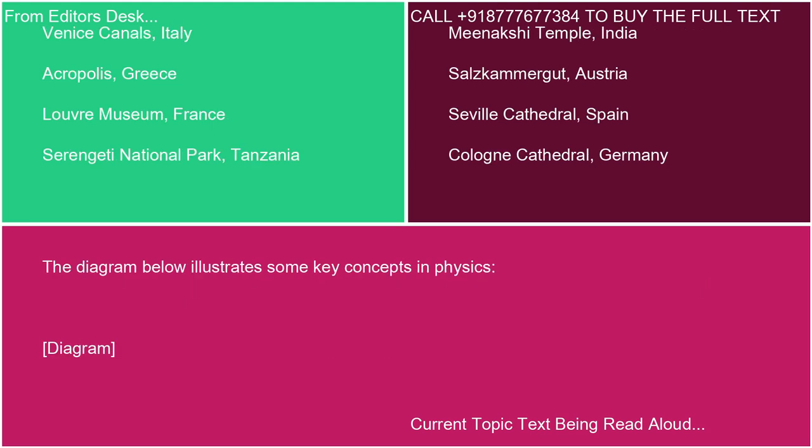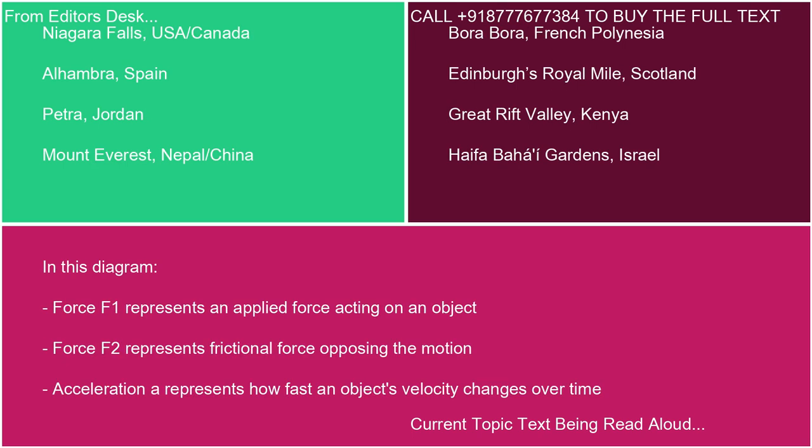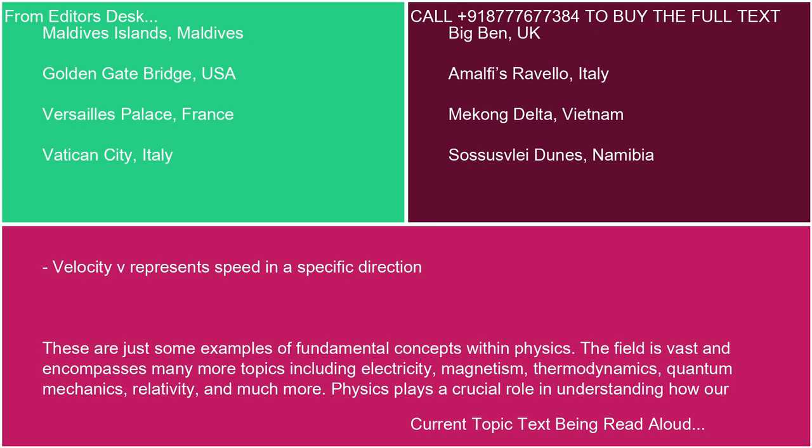The diagram below illustrates some key concepts in physics. Force F1 represents an applied force acting on an object. Force F2 represents frictional force opposing the motion. Acceleration represents how fast an object's velocity changes over time. Velocity V represents speed in a specific direction. These are just some examples of fundamental concepts within physics.